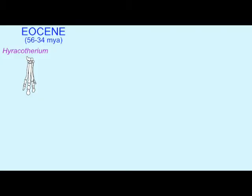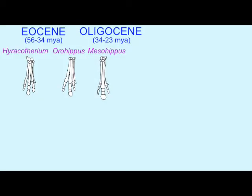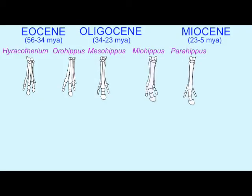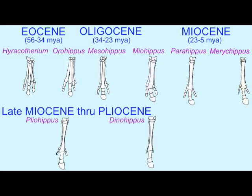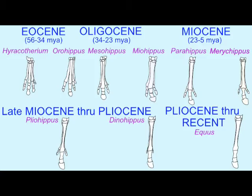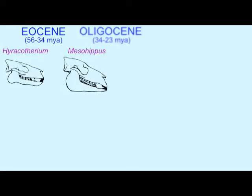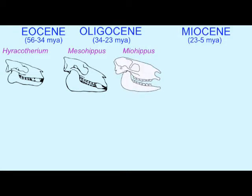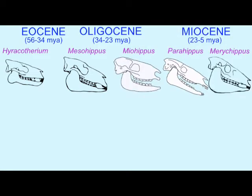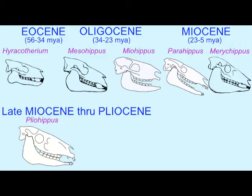Take, for example, the evolutionary changes seen in the horse lineage. The changes which transformed the small, multi-toed ancestral browsing organisms into the large, grazing, single-toed horses of today occurred gradually over tens of millions of years.